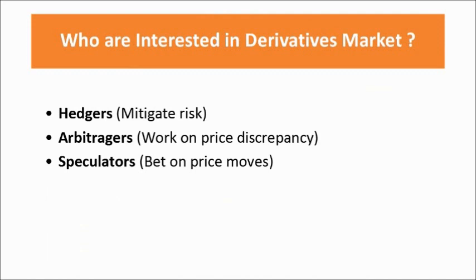The third kind of participant is the speculator. A speculator is a person who basically wants to take advantage of market movement — upwards or downwards. Speculators use derivatives because derivatives give them better exposure where with very little money they can make an immense return in a very short term. We will see more speculative examples using futures, options, and various derivative products in future sessions.